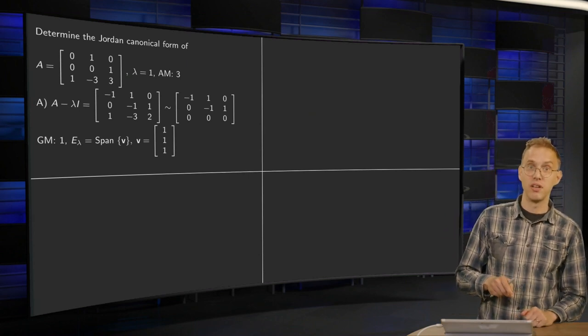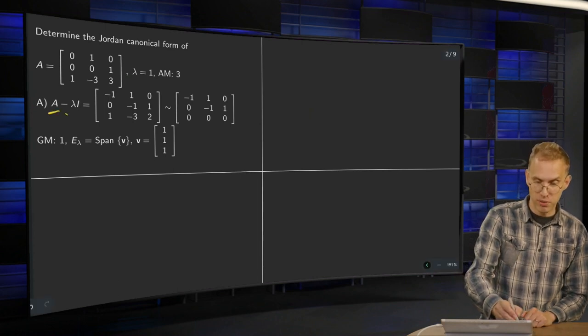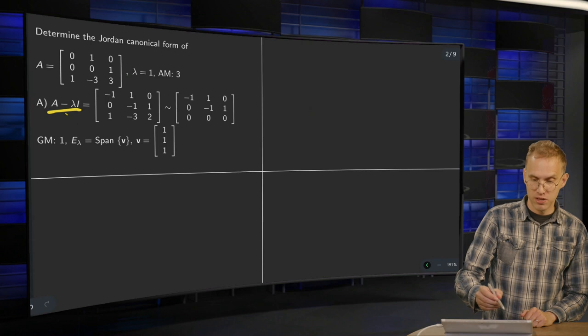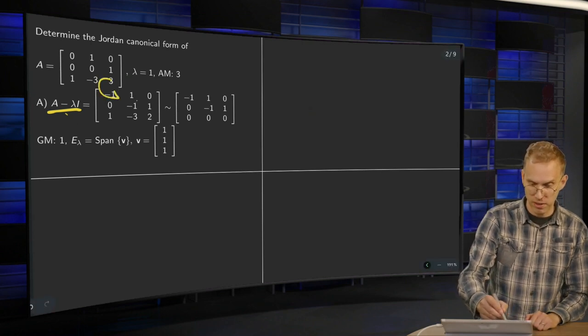Step A. Let's see where we can find the geometric multiplicity first. You compute A minus lambda I. So that means you subtract 1 from the diagonal, so you get a minus 1, a minus 1, and a 2.